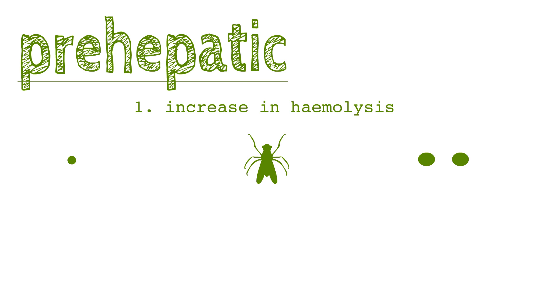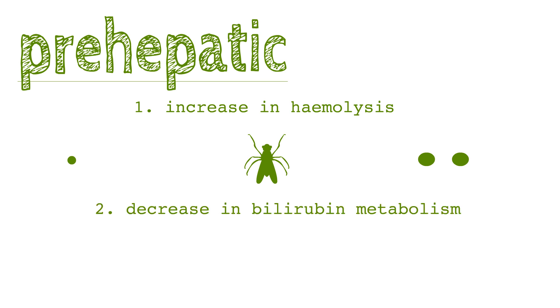Prehepatic jaundice can also be caused by a decrease in bilirubin metabolism. This can be due to Crigler-Najjar syndrome type 1 and 2, or Gilbert syndrome.